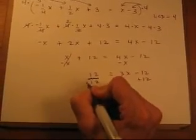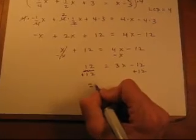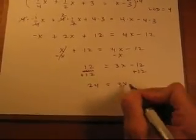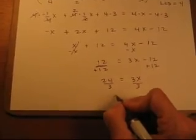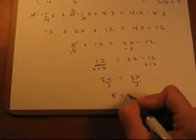Oops, that's not a divide. That's an add. That gives us 24 equals 3x. Dividing by 3, we get our answer. 8 equals x.